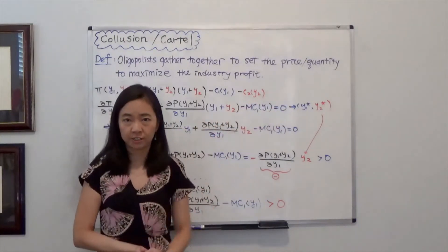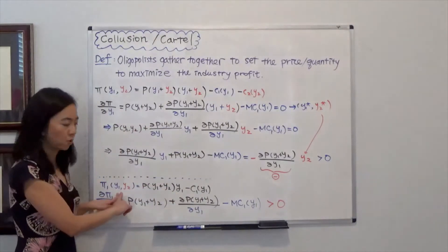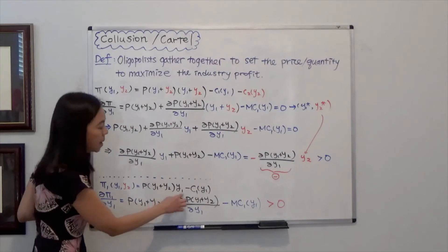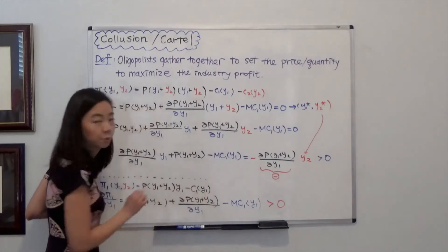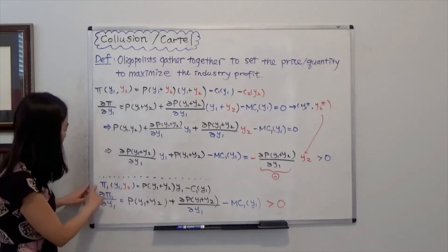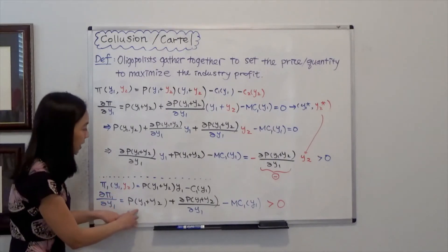How do I know that? The profit of firm 1 is the price times the quantity of firm 1 minus the total cost of firm 1. And taking partial derivative of profit with respect to Y1, you'll get, again, I'm using product rule here.